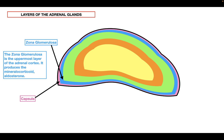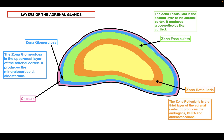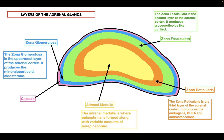The layer below the zona glomerulosa is called the zona fasciculata, which is the second layer of the adrenal cortex and is responsible for producing cortisol. The final layer of the adrenal cortex is the zona reticularis, which produces androgens — DHEA and androstenedione. The final region of the adrenal gland is the adrenal medulla, which is responsible for producing epinephrine as well as variable amounts of norepinephrine. So those are all the layers of the adrenal glands.